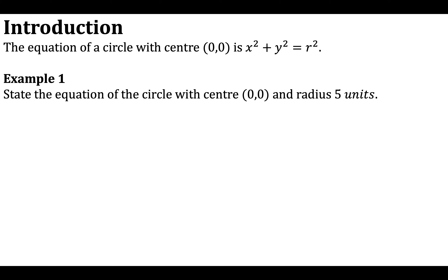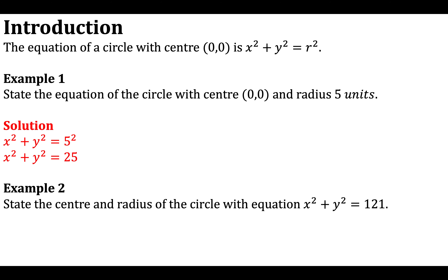For the first example, we want to state the equation of the circle with centre at the origin and radius 5 units. We know the general form is x squared plus y squared equals R squared, and in this case R is 5. So expanding the right-hand side, 5 squared is 25, giving us x squared plus y squared equals 25.